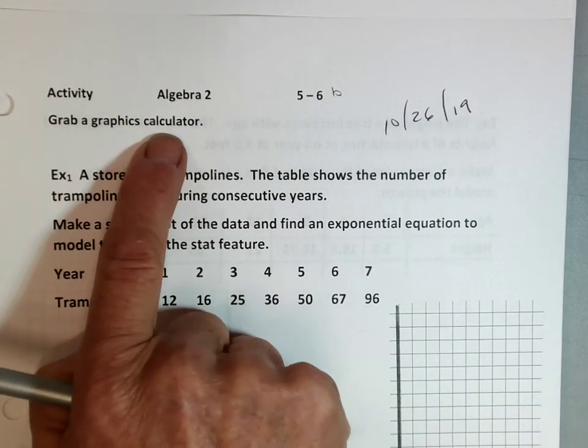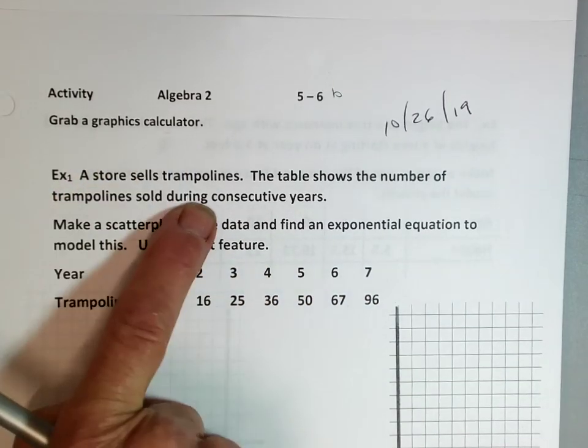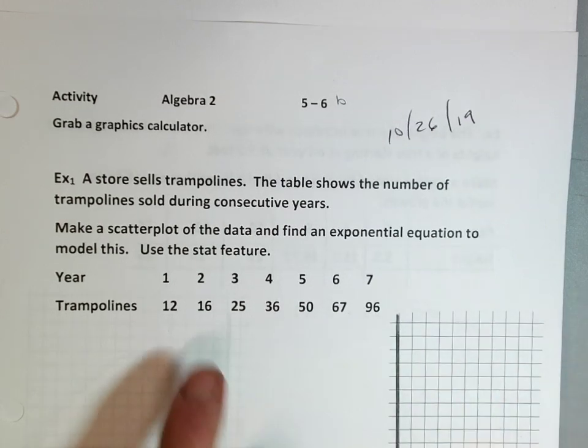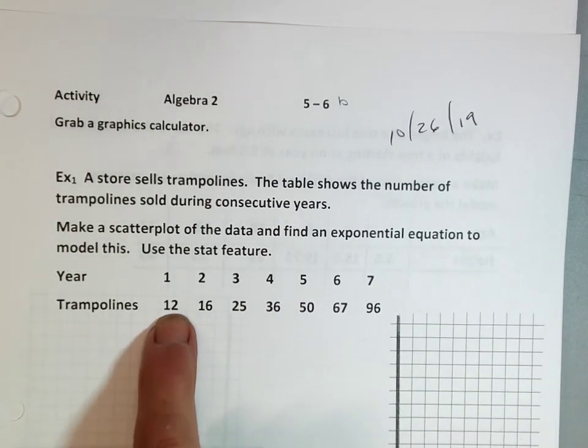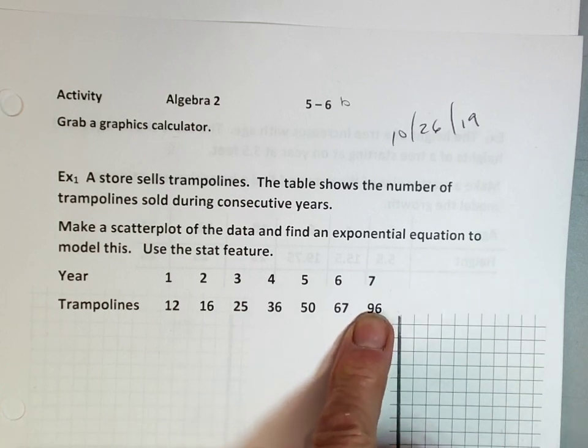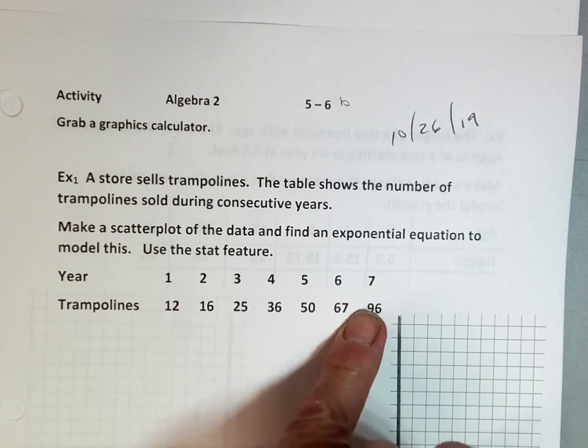So it says grab a graphics calculator, which I assume you guys have. Example one: a store sells trampolines. The table shows the number of trampolines sold during consecutive years. Make a scatterplot. You can see they've got a good business because they're selling more and more. It's like one of those startup businesses that's booming. They're growing at an exponential rate, and if you're a business, that is awesome. You're getting big, making some money.